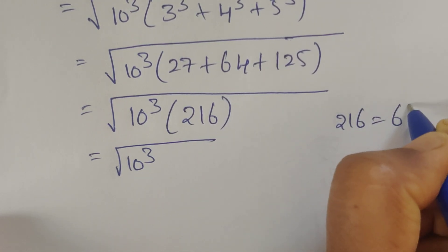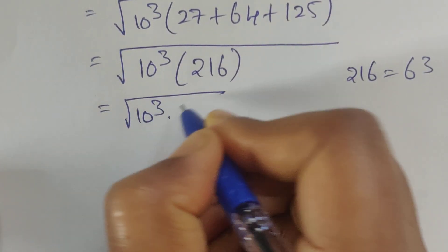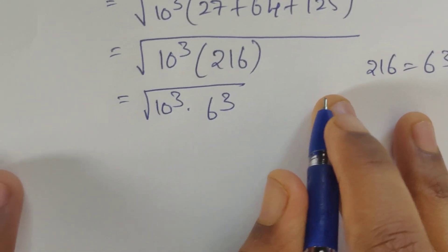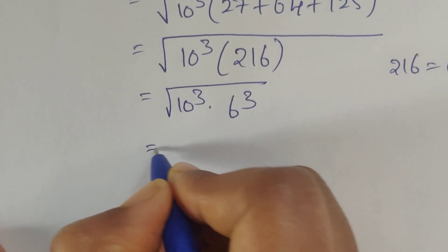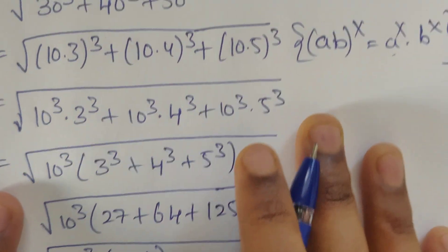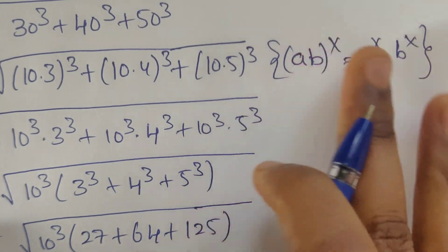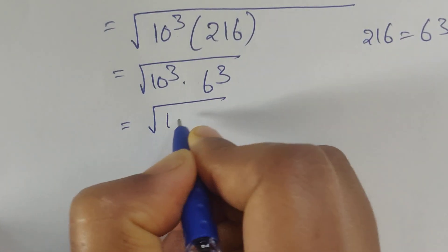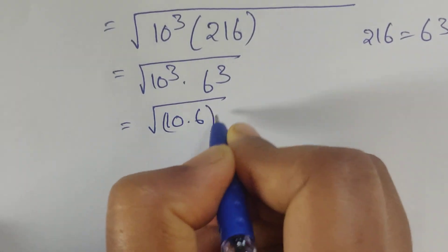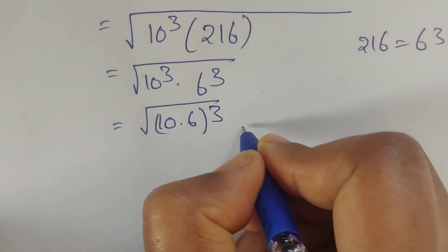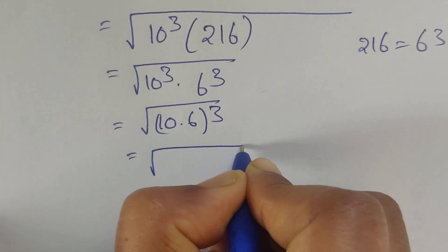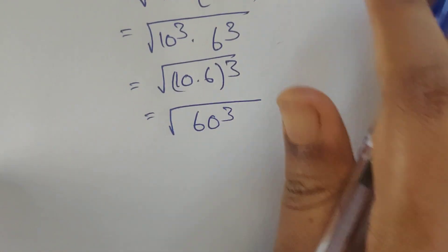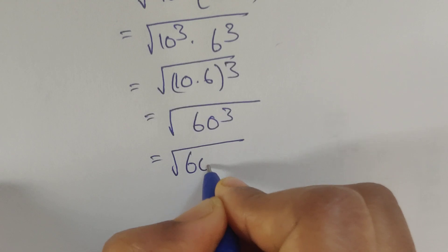The sum 27 + 64 + 125 = 216, and 216 = 6³. So we can write 10³ × 6³, and using the formula (a×b)^n = a^n × b^n in reverse, this becomes (10×6)³ = 60³. So we have the square root of 60³.